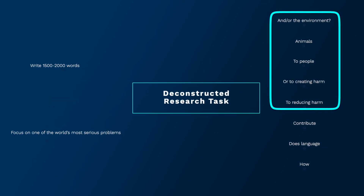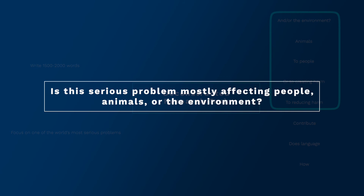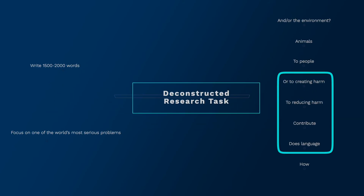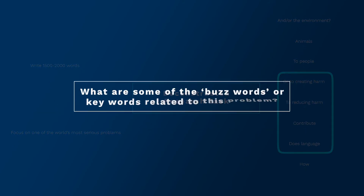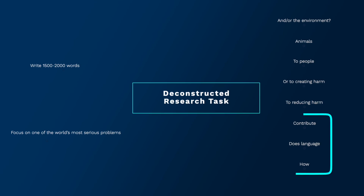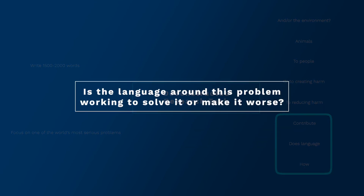Next: is this serious problem mostly affecting people, animals, or the environment? Next: what are some of the buzzwords or keywords related to this problem that people are using? Finally: is the language around this problem working to solve it or make it worse?